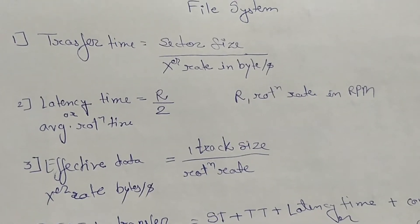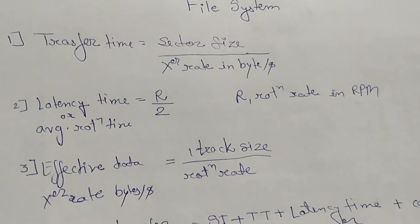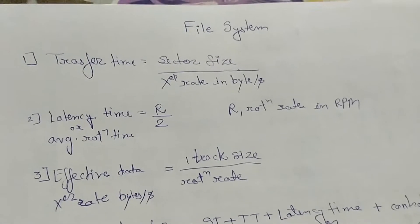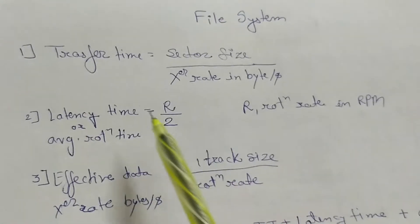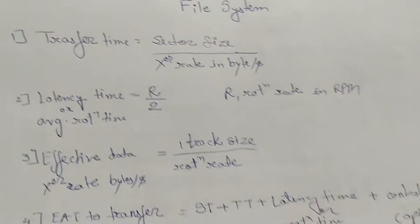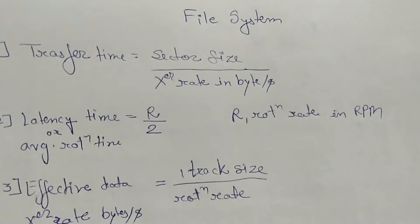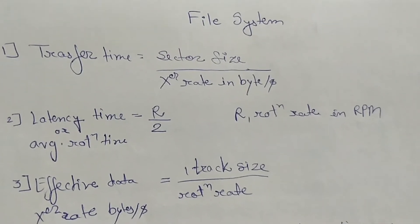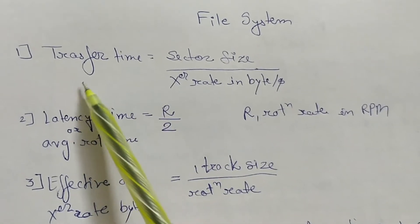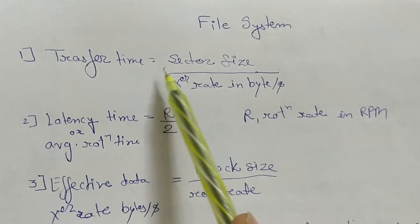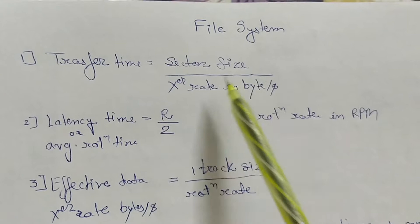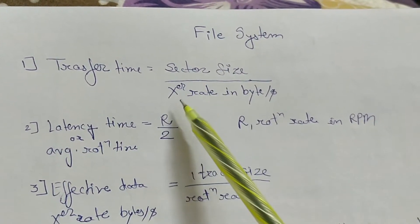The topic we are going to see now is file system with respect to the operating system. I suggest all students to have a formula group or formula book where you can note these formulas for easy revision. The first formula is transfer time for a disk: transfer time equals sector size divided by transfer rate in bytes per second.